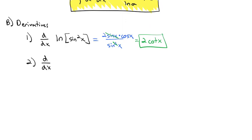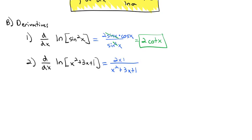Let's take the derivative of the natural log of x squared plus 3x plus 1. The derivative of the natural log gives 1 over the stuff — 1 over (x² + 3x + 1) — and the chain rule says we multiply by the derivative of the stuff, which is 2x + 3. There's no simplifying, so that's our final derivative.